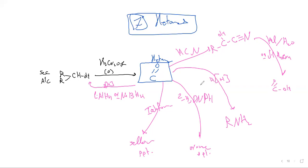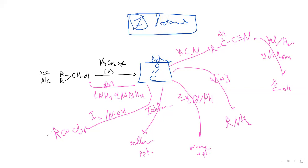Ketones can also react with I2 in the presence of NaOH to form R-COCl3. This intermediate then reacts with aqueous NaOH to form R-COO-Na plus CHI3. This is the iodoform reaction.